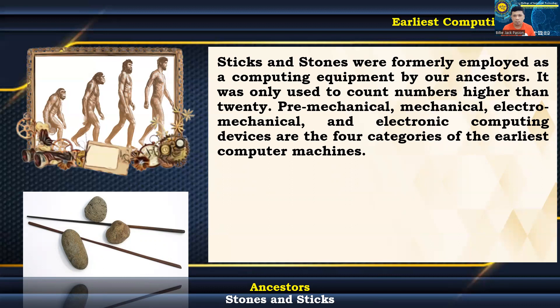Pre-mechanical, mechanical, electromechanical, and electronic computing devices are the four categories of the earliest computer machines.